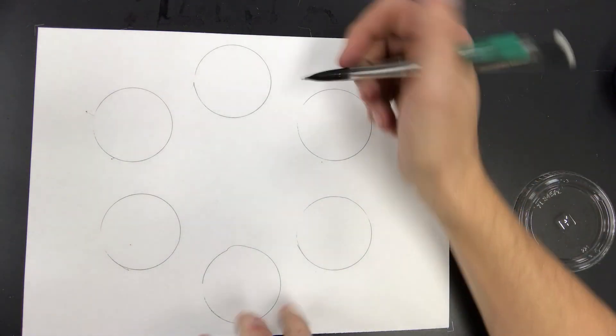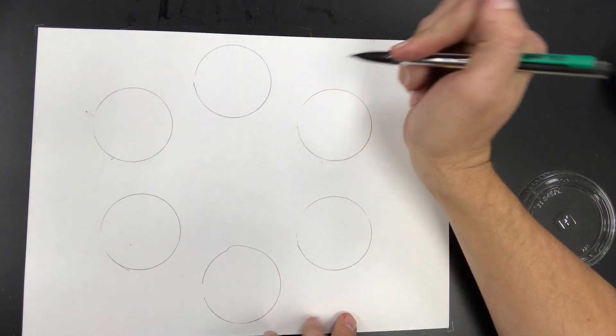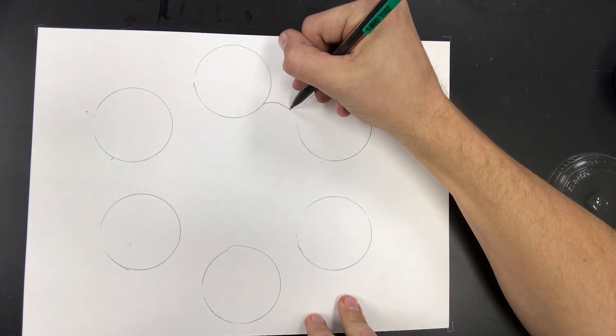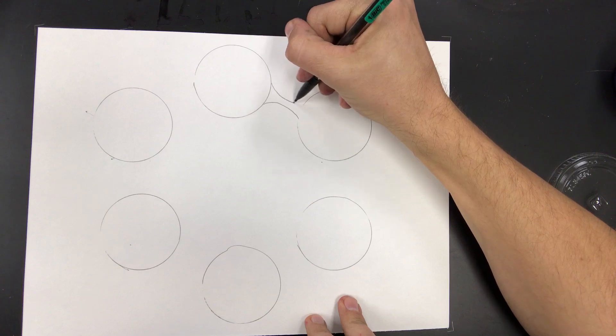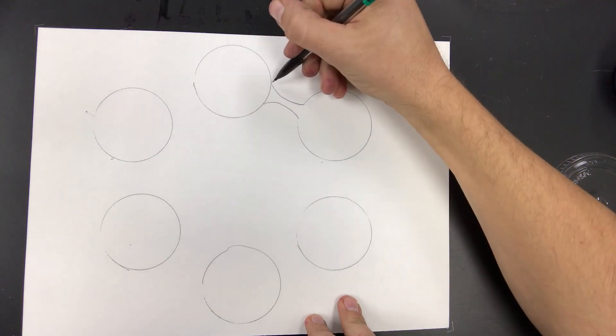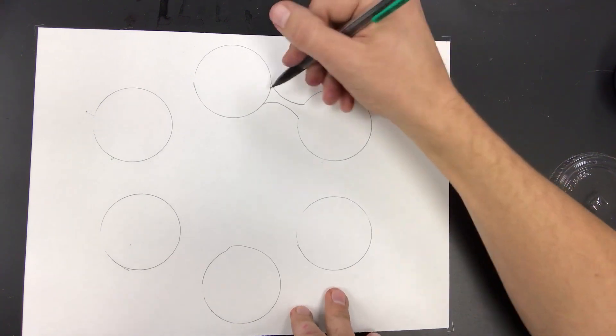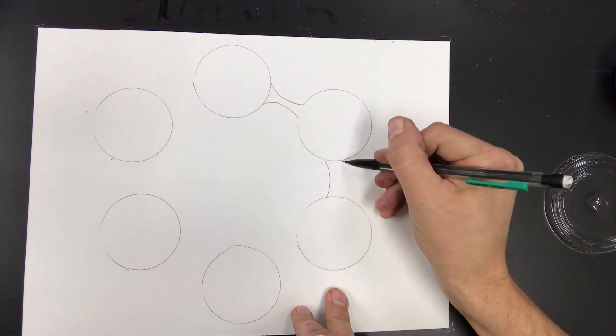Next we're going to connect them with two lines that make it look like it's stretching between them. See what I mean? So this one bends in and this one bends in and it looks like they're connected but there's a stretch going on between them. I think that's going to look really cool.